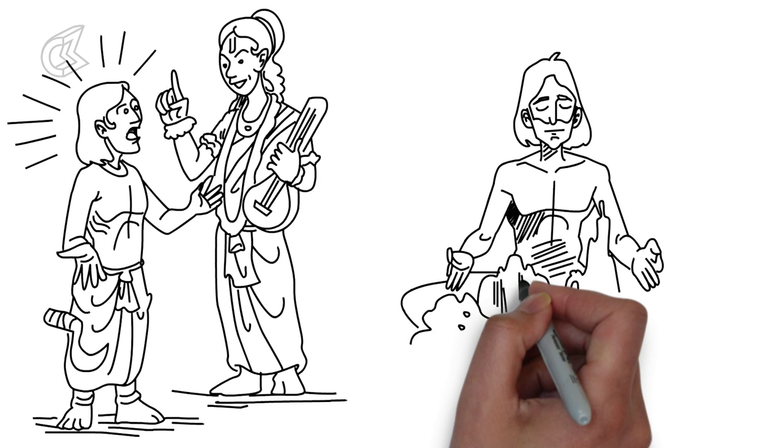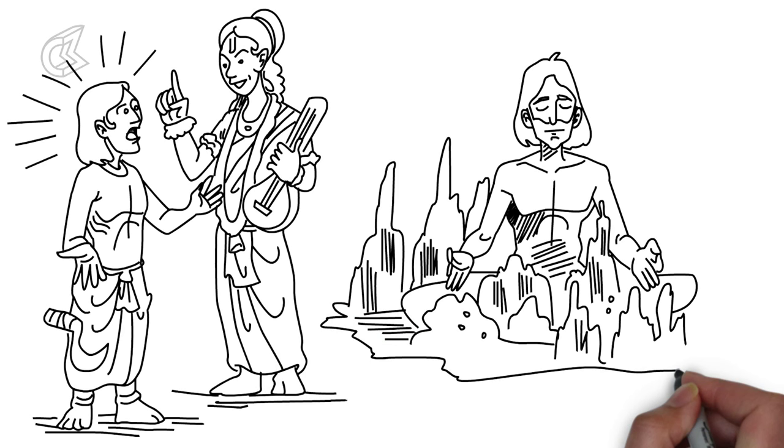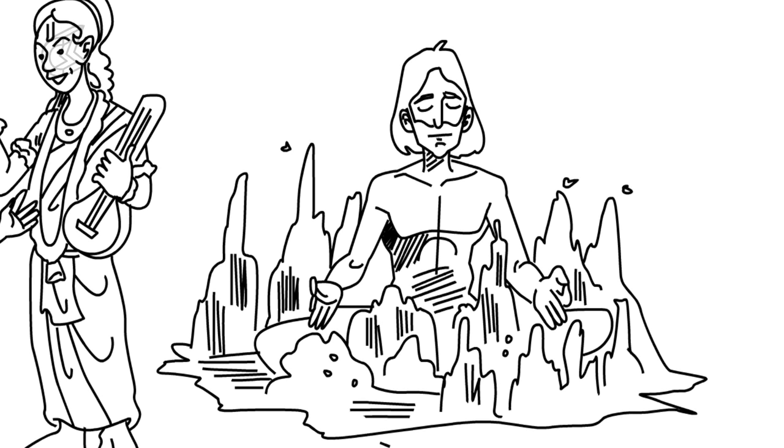His meditation reached such an intensity that anthills grew upon his body. It was not long after this that he attained salvation and was bestowed with the name Valmiki, which means one born of anthills.